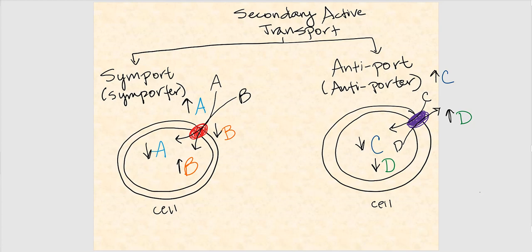The transmembrane protein that allows this to happen is referred to as an antiporter. To summarize secondary active transport: we're moving at least two substances — one following its concentration gradient from high to low, and simultaneously moving another substance against its concentration gradient from low to high.